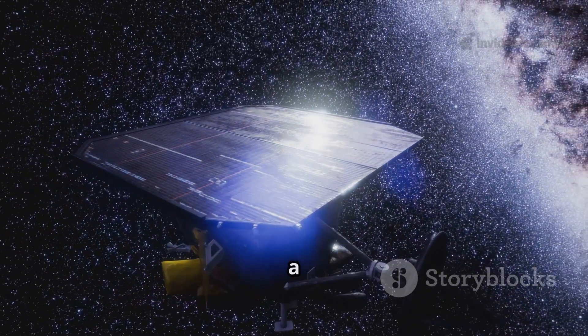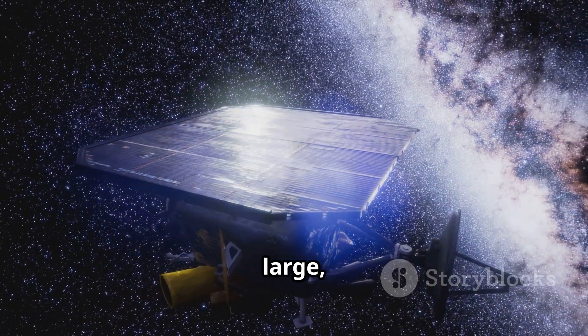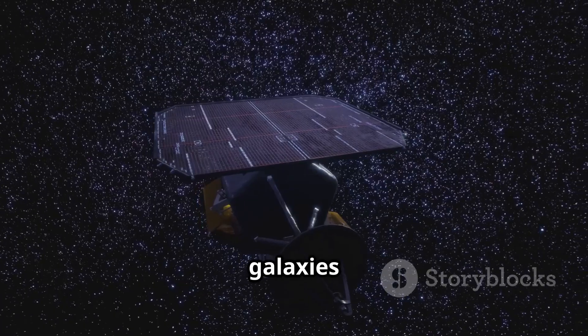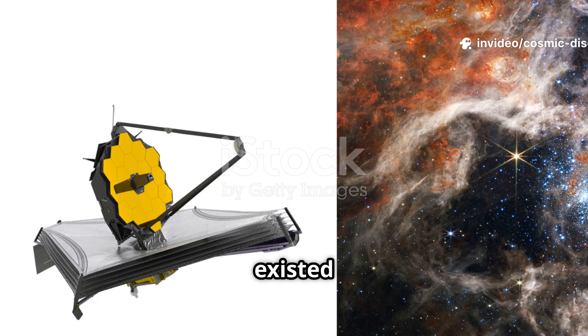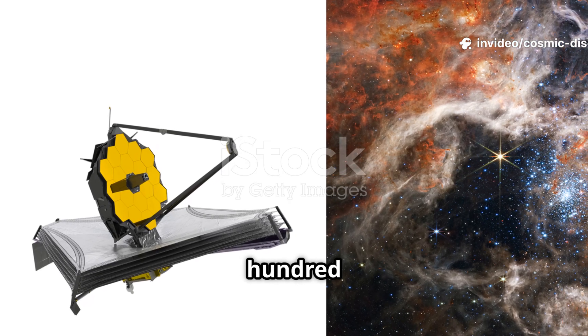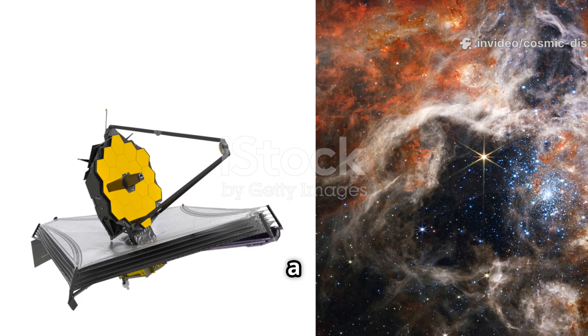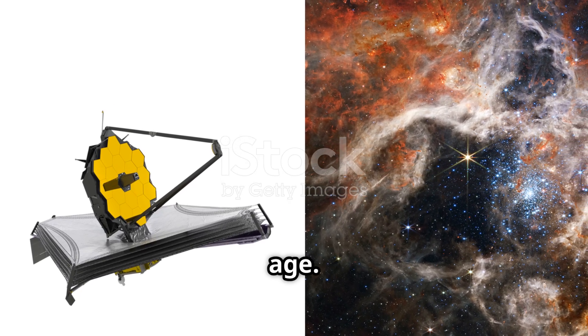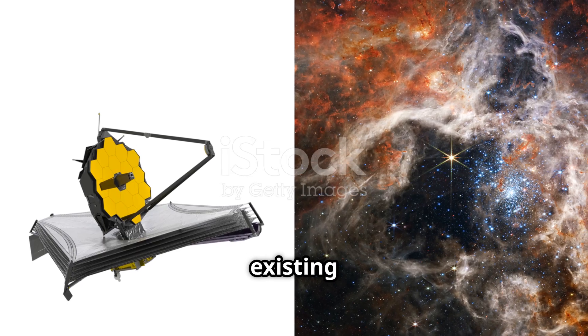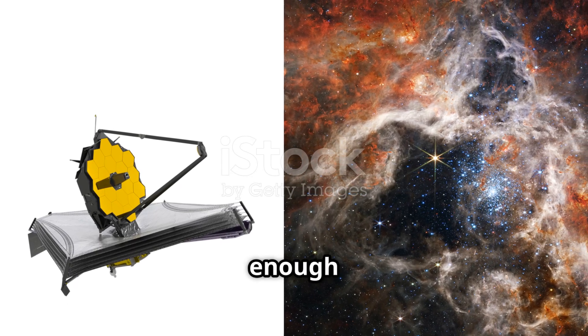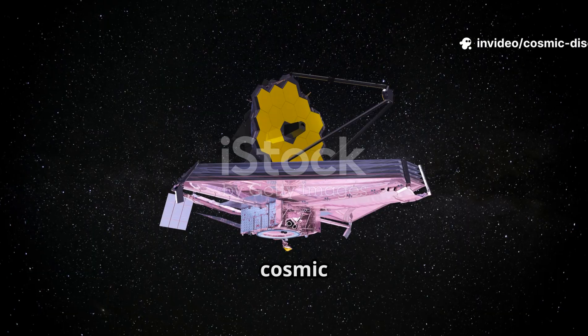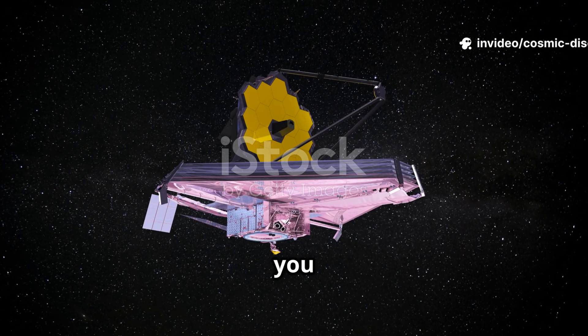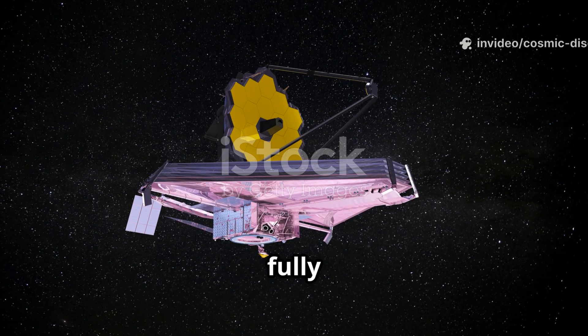The telescope discovered a surprising number of large, bright, and well-structured galaxies in the very early universe. Some of these galaxies appear to have existed when the cosmos was only 500 to 700 million years old, a mere fraction of its current age. According to our existing models, there simply should not have been enough time for galaxies to grow so massive and mature so quickly. It is a cosmic conundrum. It is as if you looked into a nursery and found fully grown adults.